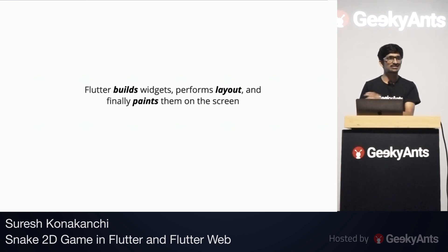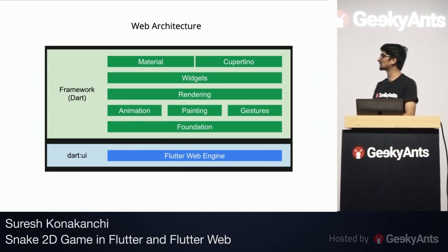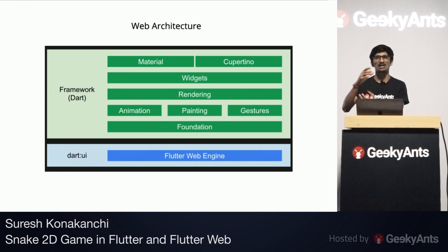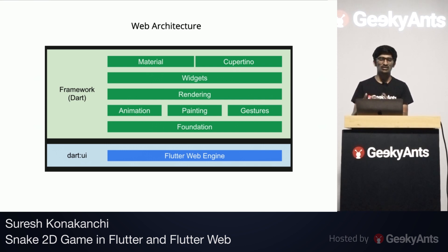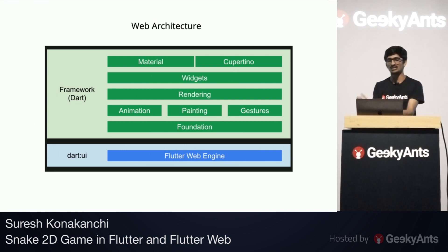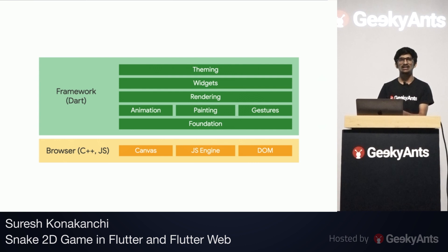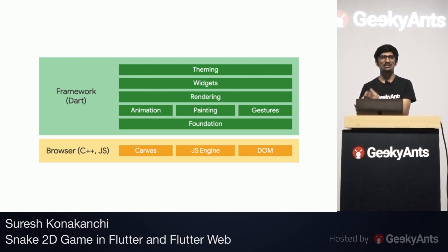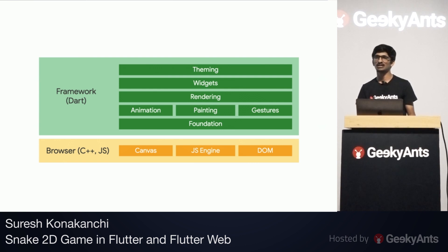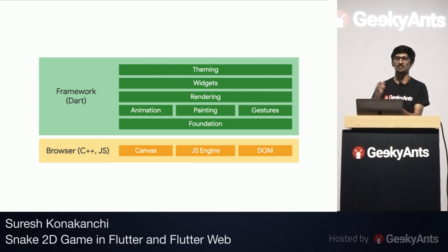Now let's jump into the web architecture for Hummingbird. The topmost layer is common. The Flutter team tried to use the same engine and architecture to build applications for the web, but after a lot of trials and failures, they decided to completely replace the engine. That's why they replaced the mobile engine with the Flutter web engine, which consists of HTML, DOM elements, Canvas and a JavaScript engine. The Dart code is directly converted to JavaScript using this engine. Whatever elements can be represented using DOM are shown that way; otherwise, Canvas is used to draw elements not representable by DOM.